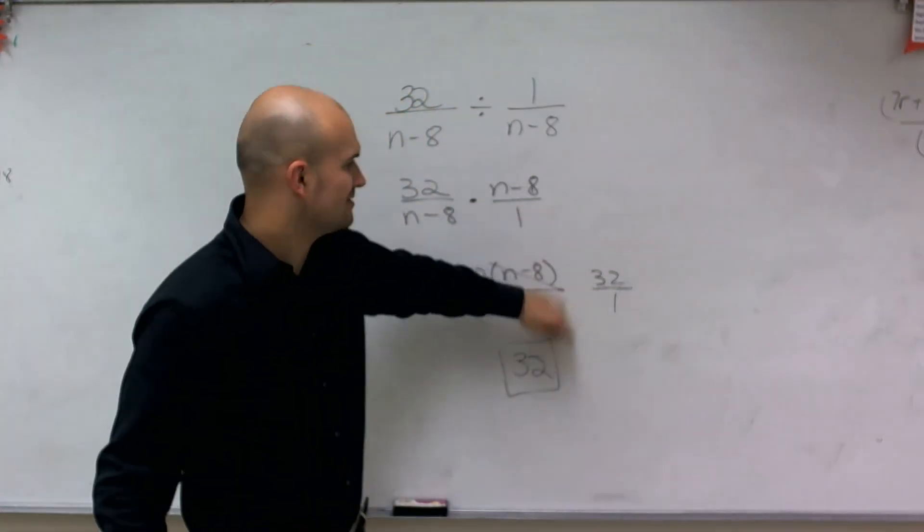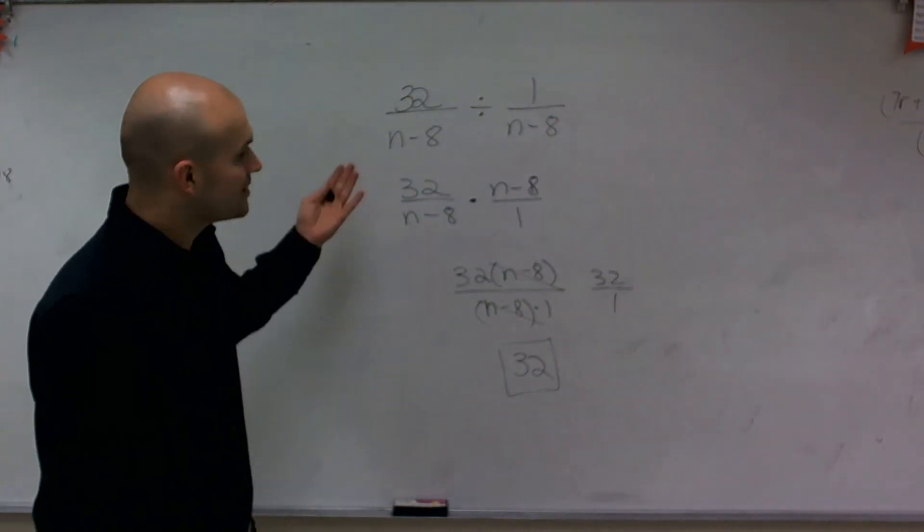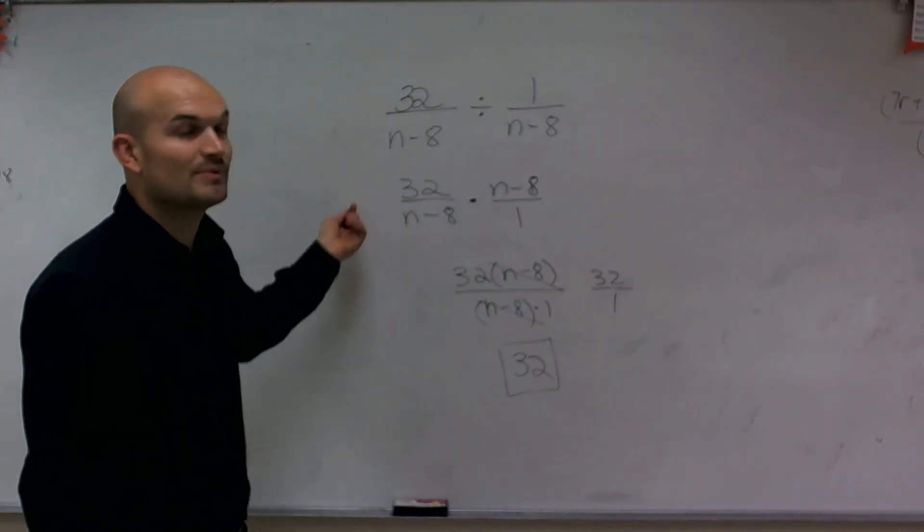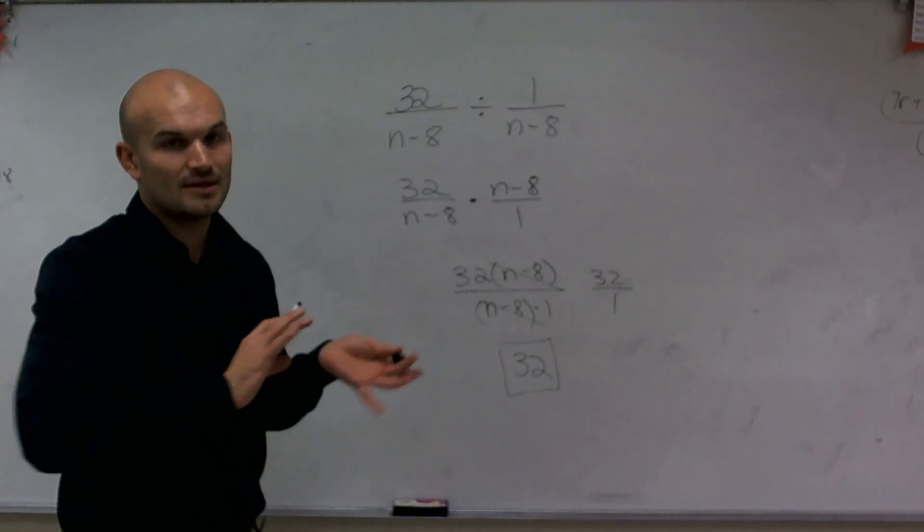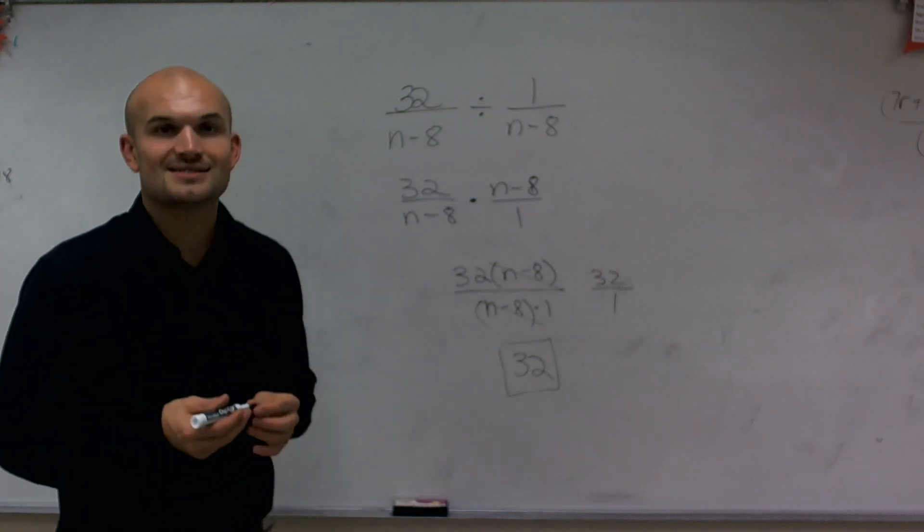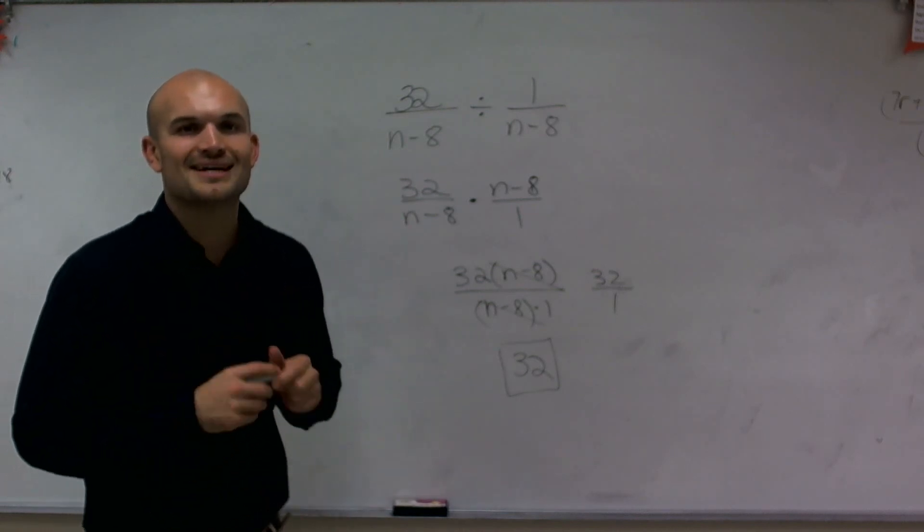So there you go. That's all we're really doing when we're simplifying. Just make sure you flip and reciprocate, multiply across, and then simplify. Hope you enjoyed. Thanks for watching.